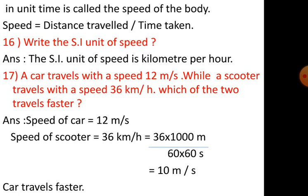For this, either we have to convert meter per second to kilometer per hour or kilometer per hour to meter per second. Here I changed kilometer per hour to meter per second. So 36 kilometer per hour is equal to 36 into 1000 by 60 into 60, which equals 10 meter per second. Car travels faster.